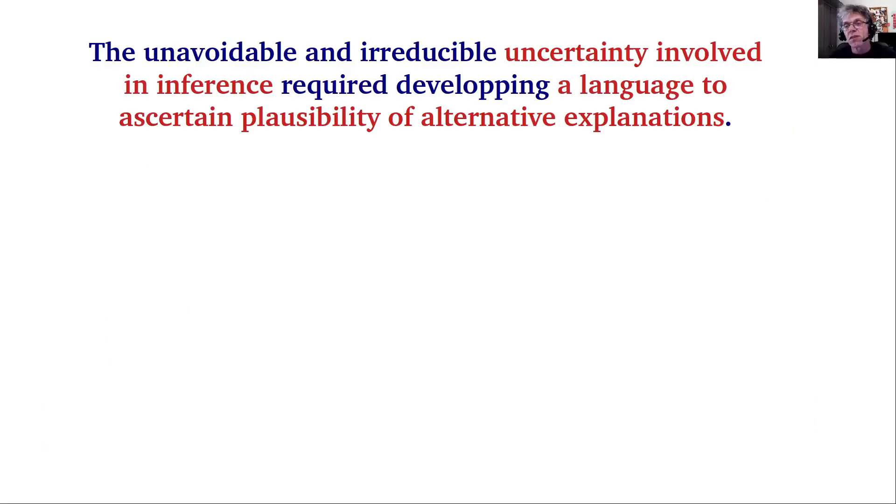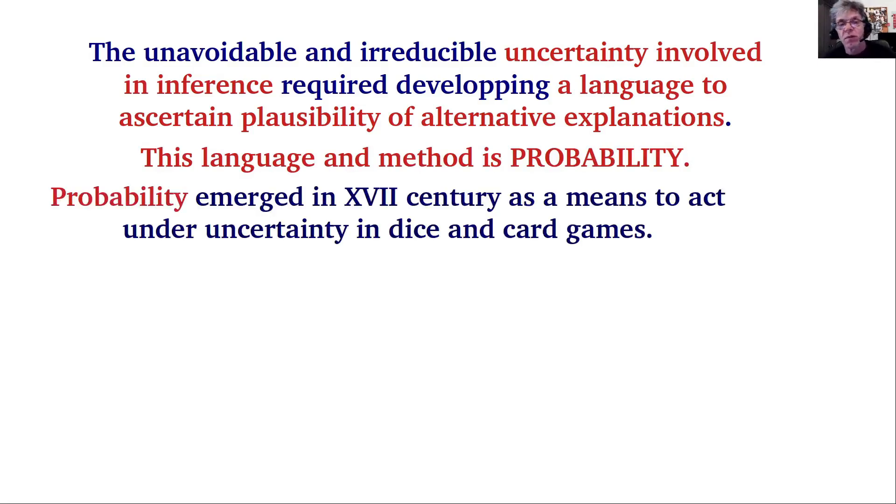The unavoidable and irreducible uncertainty involved in making inferences about observing the natural world required developing a language to ascertain the plausibility of alternative explanations. This language came to be known as probability. Probability emerged in the 17th century as a means to act under uncertainty in dice and card games, a gentleman's pastime.